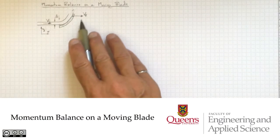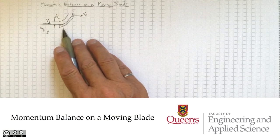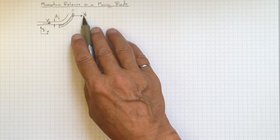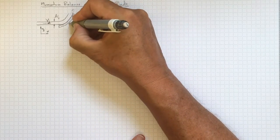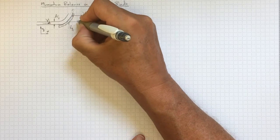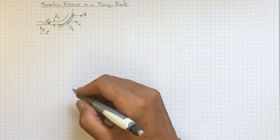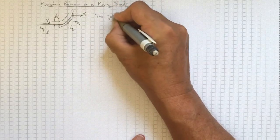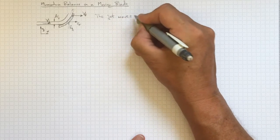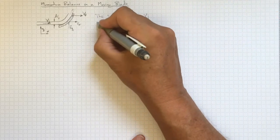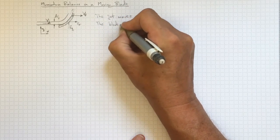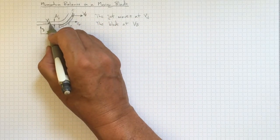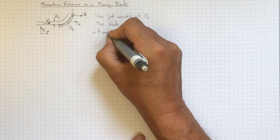In this example, we'll take our ideas about frames of reference and use them to sort out what the forces are going to be on this blade, which is moving in our fixed frame of reference. So there'll be some forces here, Fy and Fx, acting on the fluid as the blade moves. The jet is moving at velocity Vj, and the blade is also moving in the same original direction at Vb — both in the fixed frame of reference.